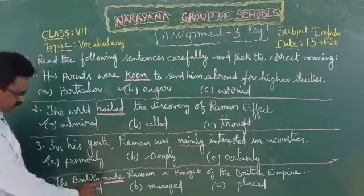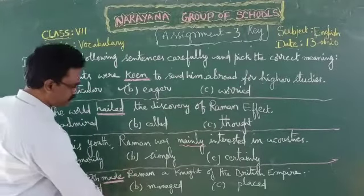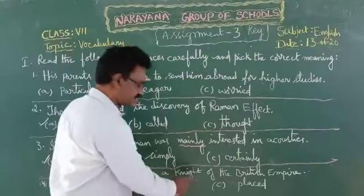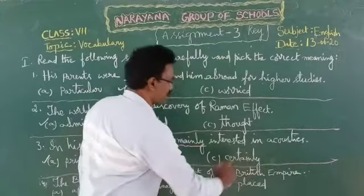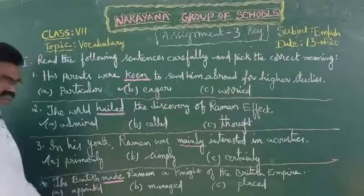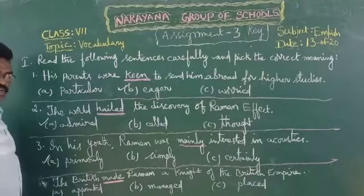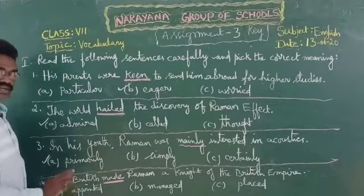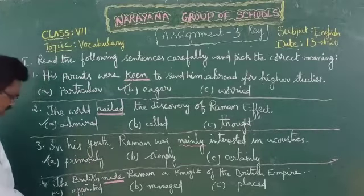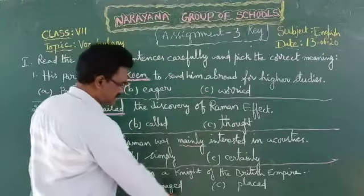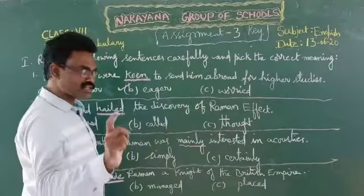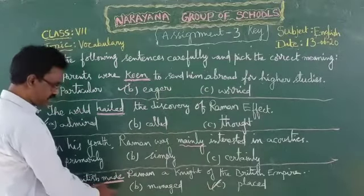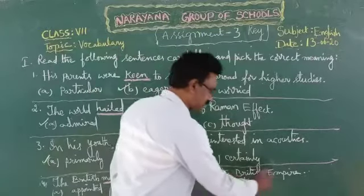Now let us see the fourth one: The British made Raman a knight — K-N-I-G-H-T — a title, Knight of the British Empire. The word 'made' is underlined. Children, you may get doubt thinking 'made' means 'appointed,' but the contextual meaning is different. Options are — A: appointed, B: managed, C: placed. The right answer is 'placed' — the British placed Raman as a Knight of the British Empire. So Option C is correct.